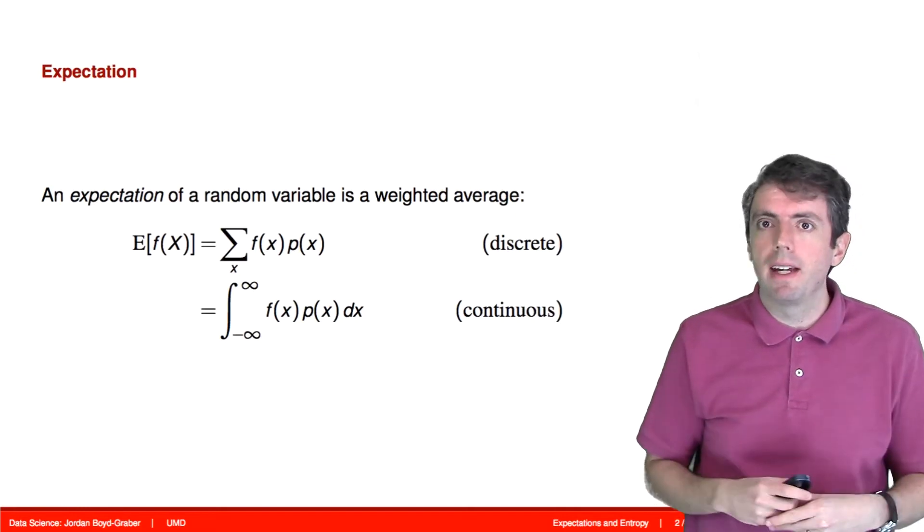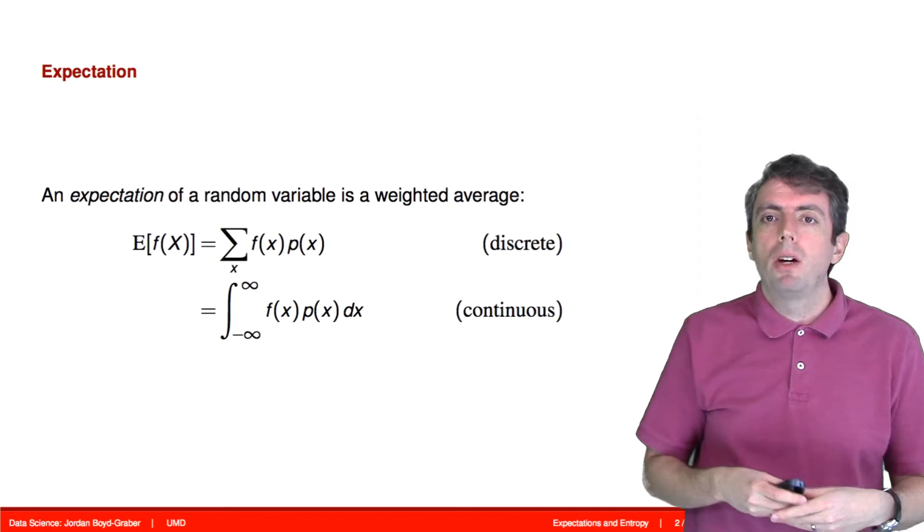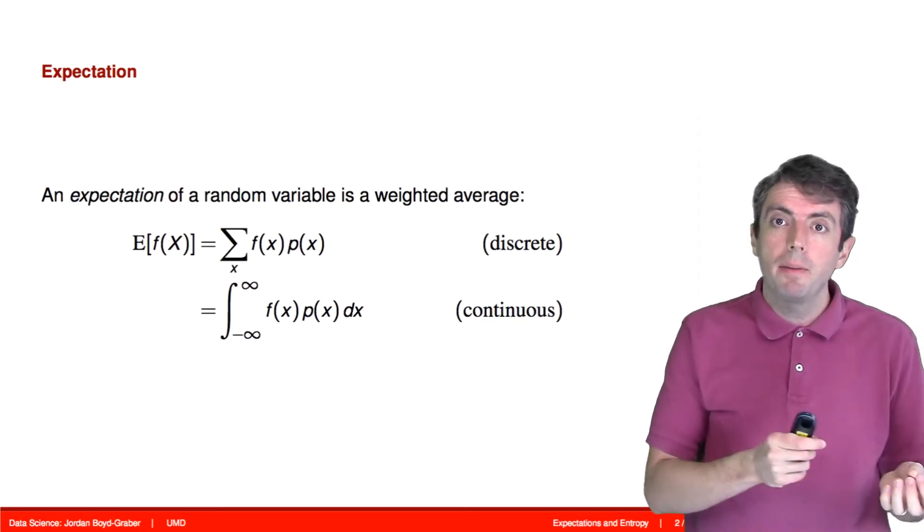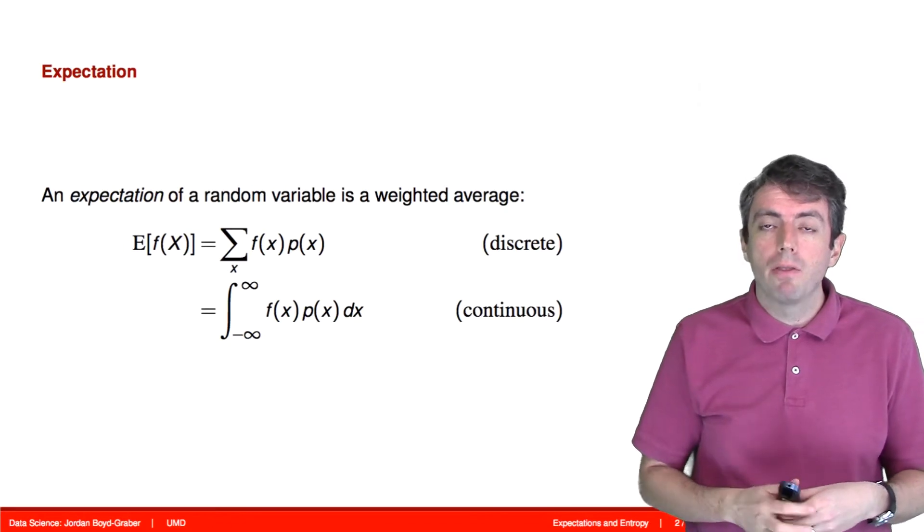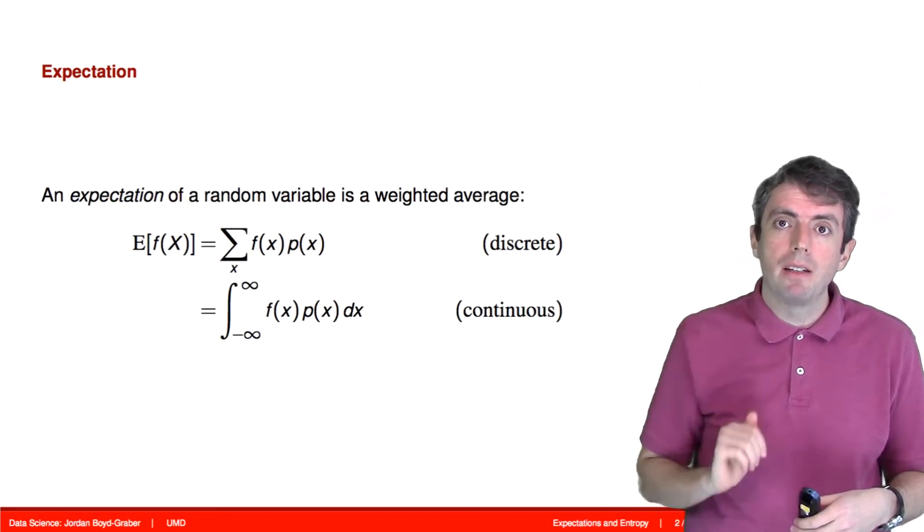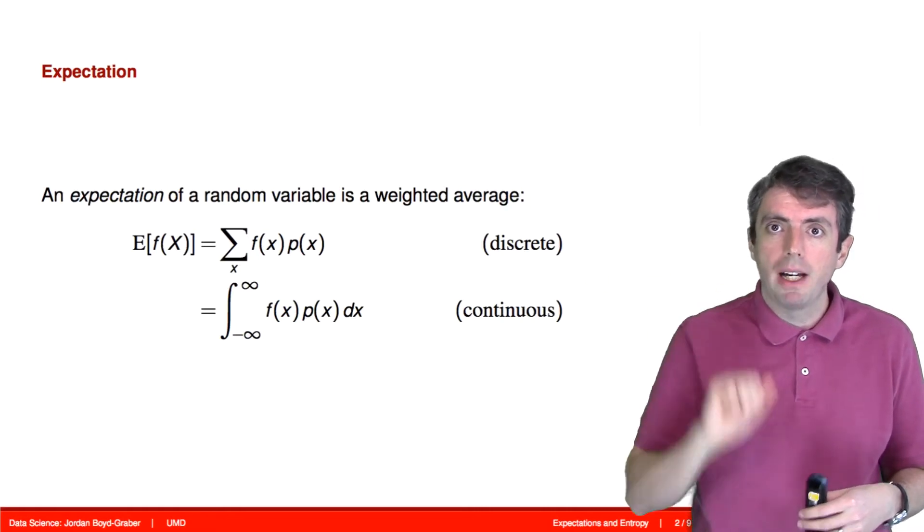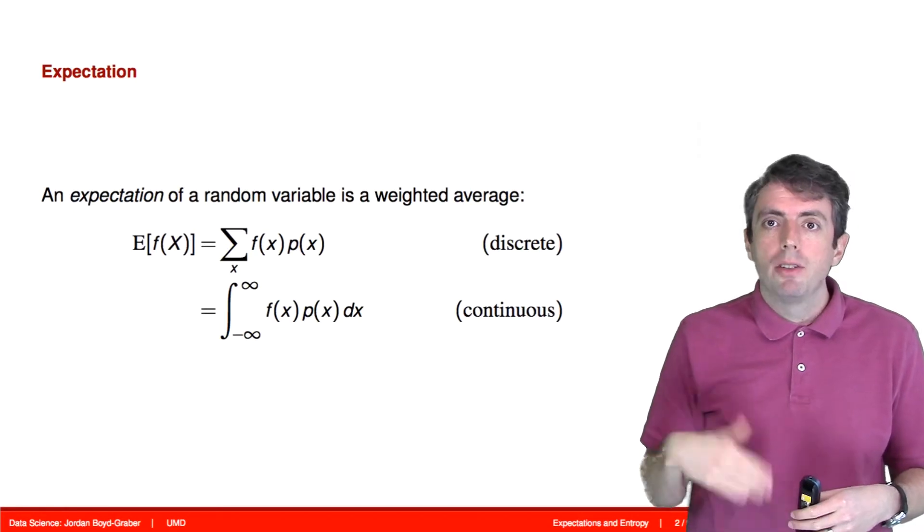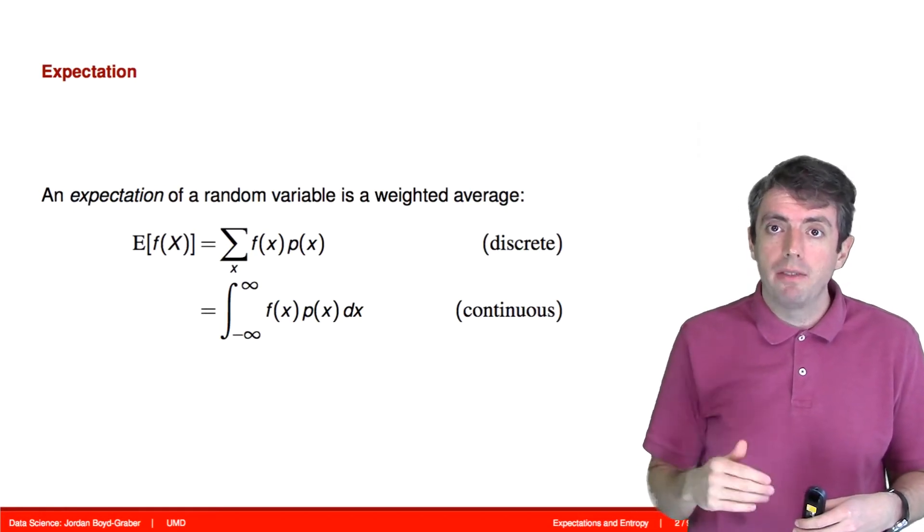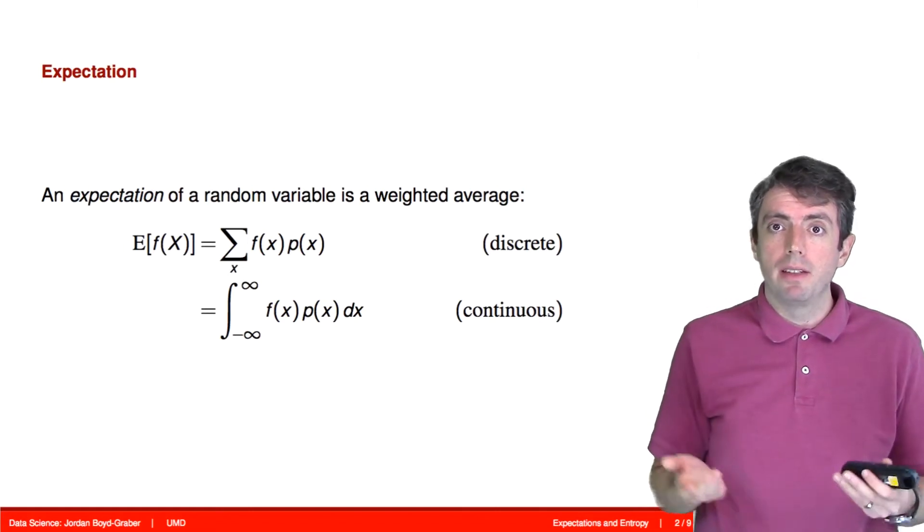Let's start with expectation. In the completely general form, we often take the expectation of some function of a random variable, and for every value that the random variable can take on, we apply that function to the value and multiply it by the probability of that value happening. For a continuous random variable, this is an integral, and for a discrete random variable, this is a sum.